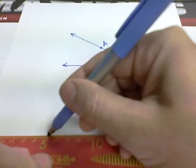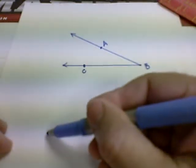The first thing we want to do is start with a working line. That's always our first step in construction. We want to label our point that's going to be our new vertex. Mine is going to be on the left end.